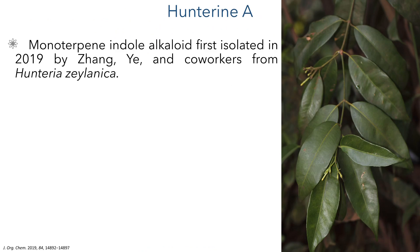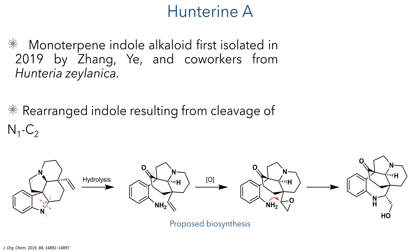Hunterine A is a monoterpene indole alkaloid that was first isolated in 2019 by Zhang, Yi and co-workers from Hunteria zeylanica. It belongs to a class of alkaloids which feature a rearranged indole ring where the N1-C2 bond has been broken, generating a large ring at the centre of the molecule.